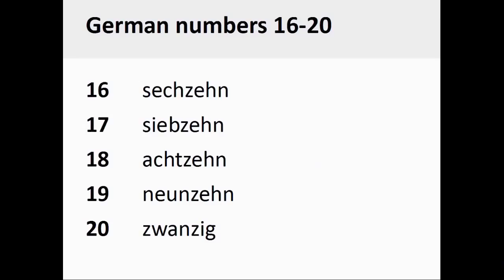The German numbers 16 through 20 are pronounced sechzehn, siebzehn, achtzehn, neunzehn, zwanzig. Again, this is very similar to English.